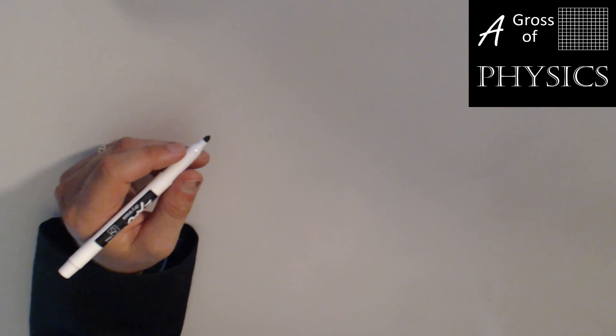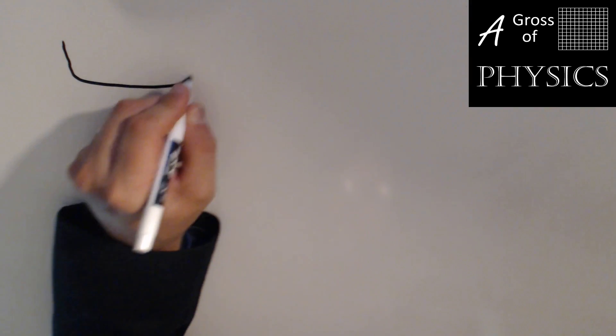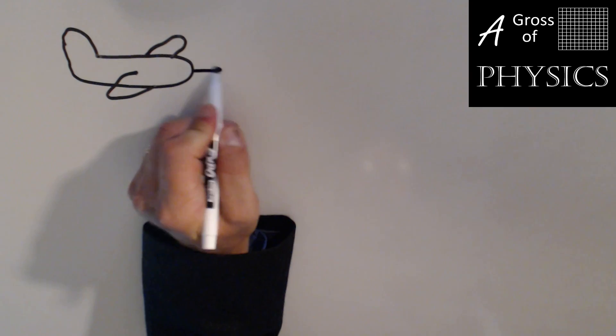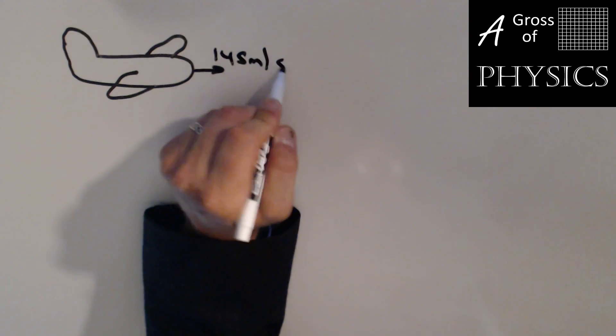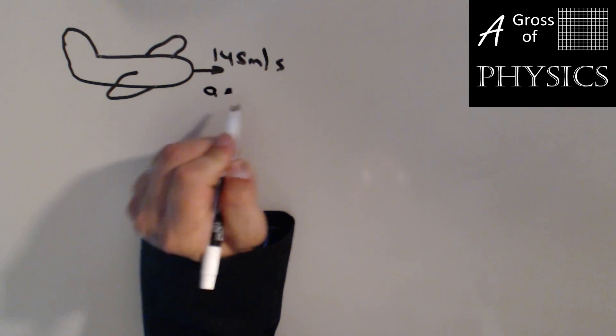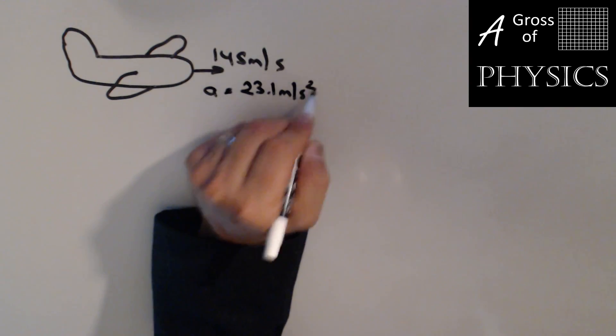The problem we'll look at now is a supersonic jet flying at 145 meters per second accelerating at a rate of 23.1 meters per second squared for 20 seconds. Find the final velocity of the plane. Although we don't really need a diagram for this one, there's our plane. And what we know is that it's moving at 145 meters per second to begin with. It also has an acceleration of 23.1 meters per second squared.